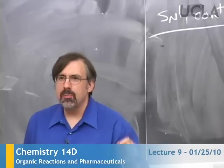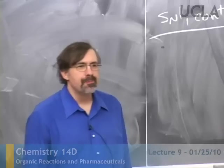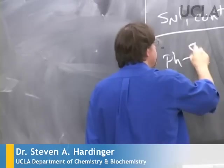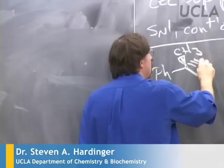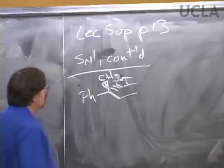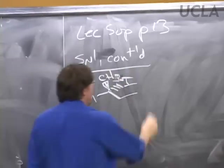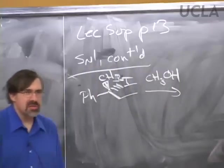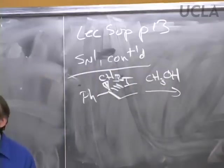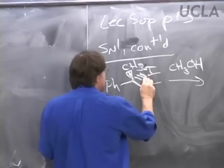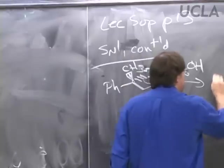Today we will finish our discussion of SN1 and start on elimination reactions. Last time we were talking about a particular SN1 reaction involving a tertiary iodide, where the iodide gets replaced with methanol. The mechanism for this process: SN1 is characterized by the presence of a carbocation, unlike SN2. We start by ionization of the carbon-leaving group bond to make the carbocation.